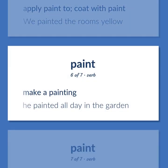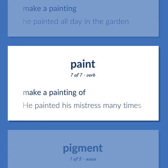Make a painting. He painted all day in the garden. Make a painting of. He painted his mistress many times.